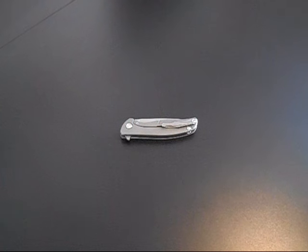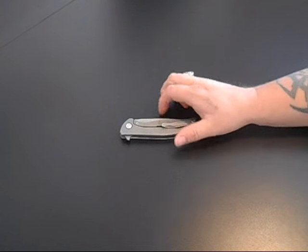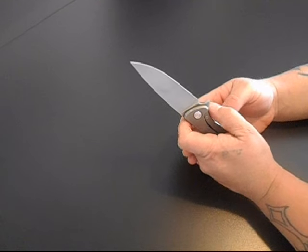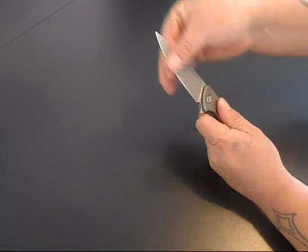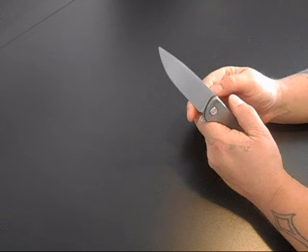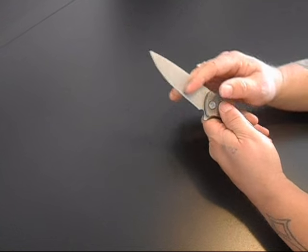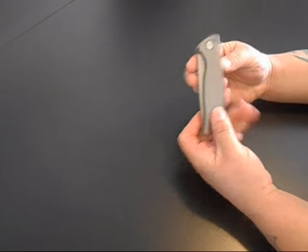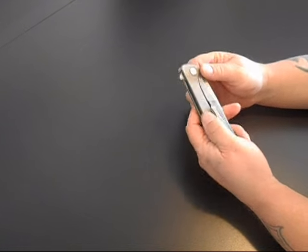Here is the knife, the Shirogorov 95 clone. 9Cr18MoV steel blade. From what I understand it's an equivalent to 440C, full flat ground drop point, flipper design, full titanium scales.